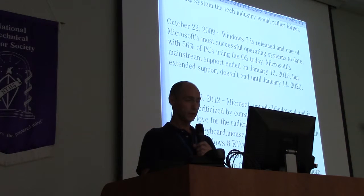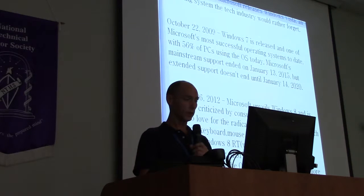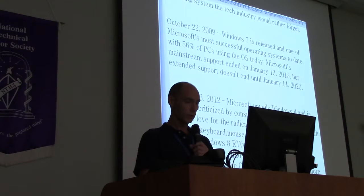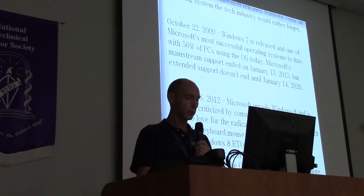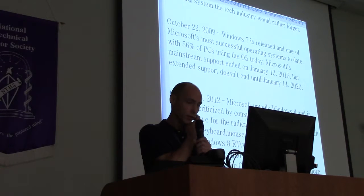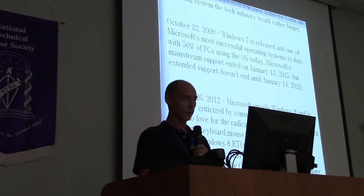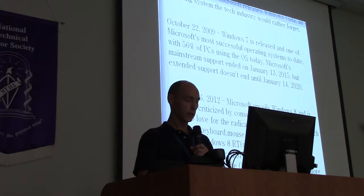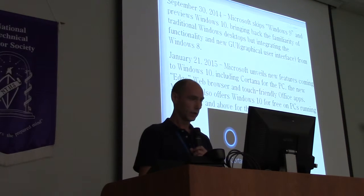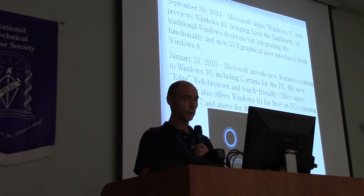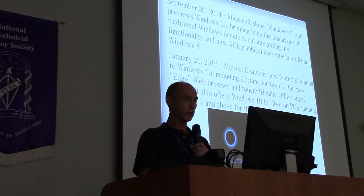On October 26, 2012, Microsoft unveils Windows 8, severely criticized by consumers and businesses who had no love for the radically redesigned interface supporting keyboard, mouse, and touch. Microsoft also releases Windows 8 RT, which unofficially stands for Runtime, an OS for ARM-based tablets. A year later Microsoft updates the OS to Windows 8.1, offering more enterprise features and added stability, but business adoption remains slow. Then September 30, 2014, Microsoft skips Windows 9 and previews Windows 10, bringing back the familiarity of traditional Windows desktops while integrating the new GUI from Windows 8.